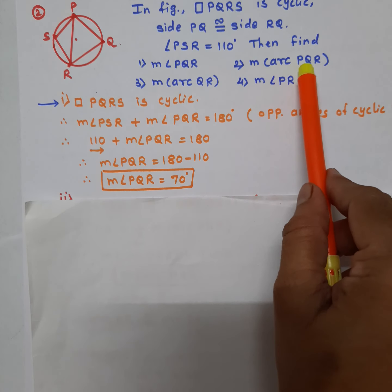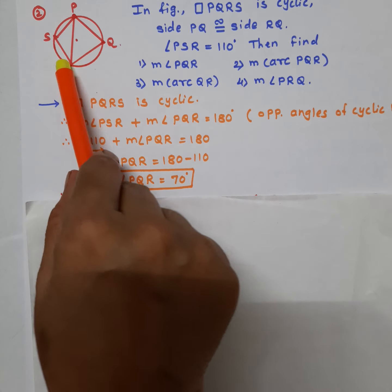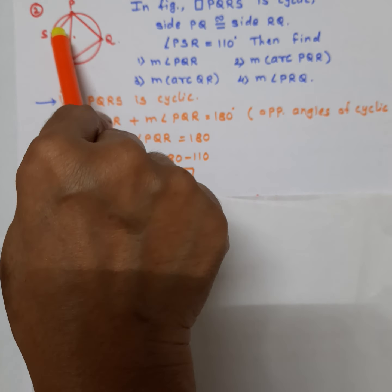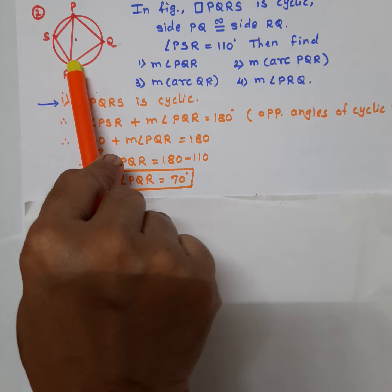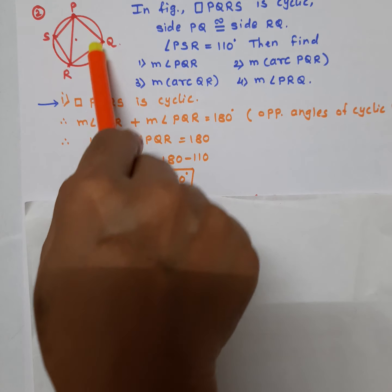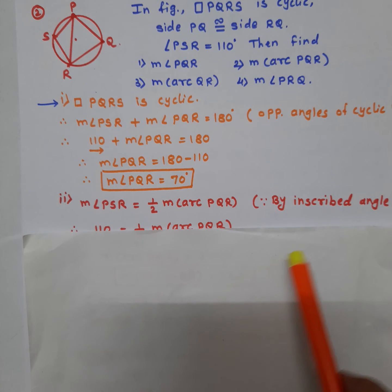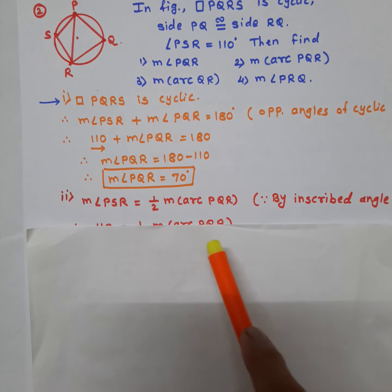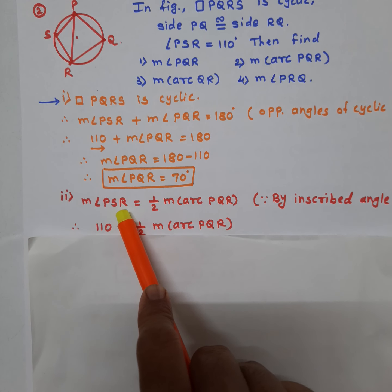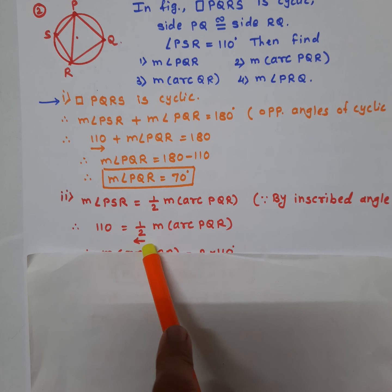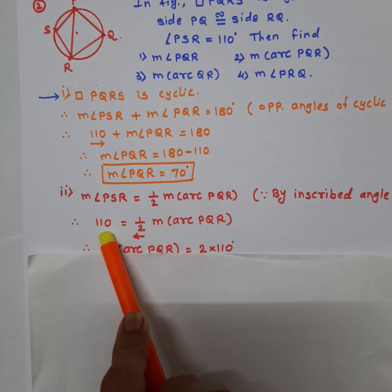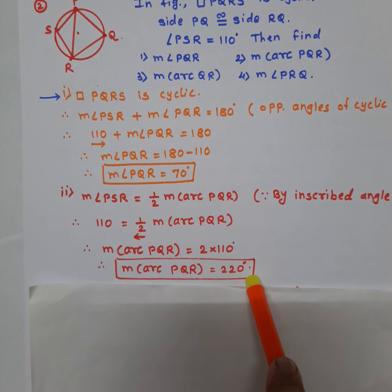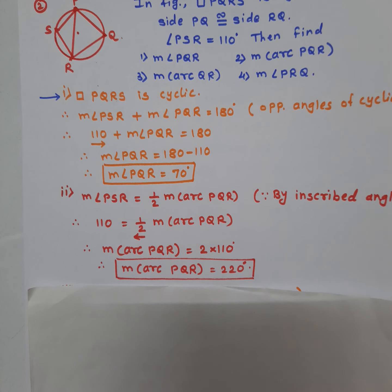The next answer is major arc PQR. Angle PSR is the inscribed angle and arc PQR is the intercepted arc. By the inscribed angle theorem, angle PSR equals half of arc PQR. Substituting the value of PSR and transferring the half to the other side, arc PQR equals 2 times 110, which equals 220 degrees. Therefore, major arc PQR is equal to 220 degrees.